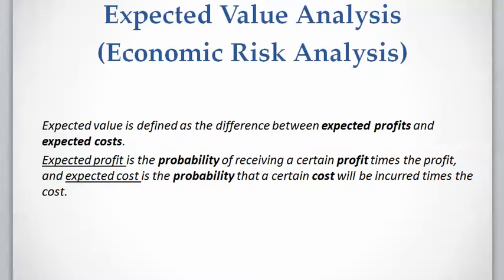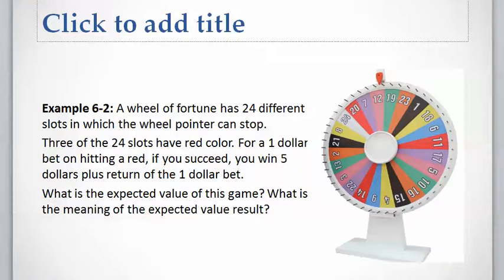Let's assume a wheel of fortune that has 24 slots, and three of these slots have red color. You randomly turn this wheel and if you get a red color you will win five dollars, and if you get any color other than red you will lose one dollar.